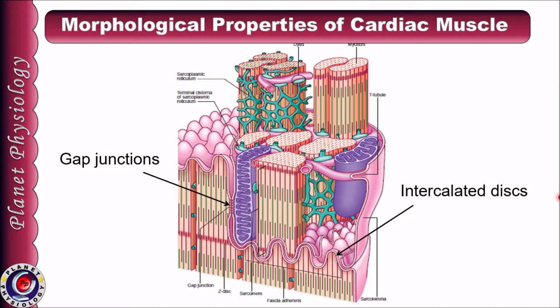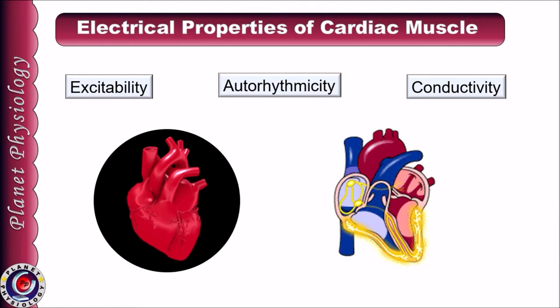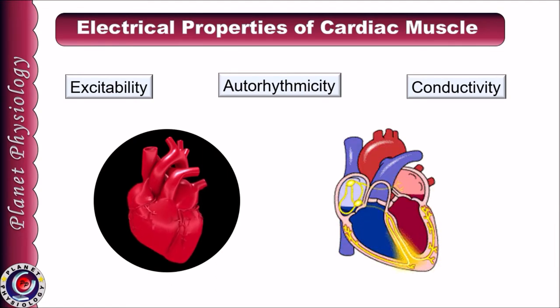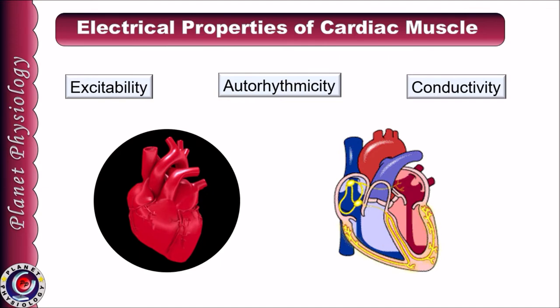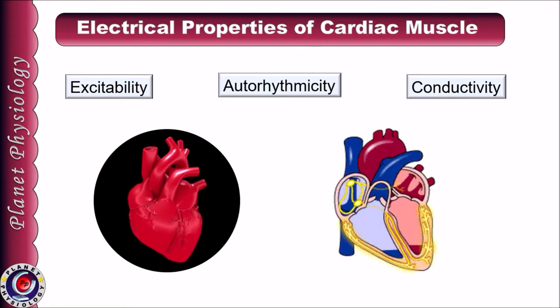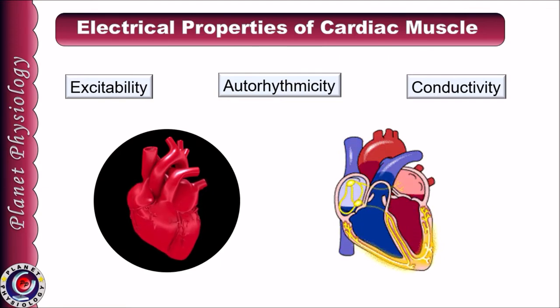Desmosomes anchor the ends of the cardiac muscle fibers together so that the cells do not pull apart during their contraction and transmit the contractile force evenly. Coming to the electrical properties, cardiac muscle shows the property of excitability, autorhythmicity, and conductivity. Let us study them in detail.